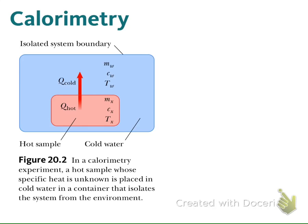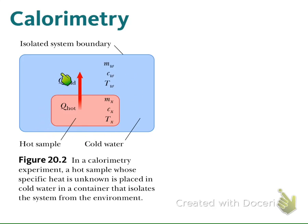To measure the specific heat of an object, we can use the technique called calorimetry, and the device in which we do this measurement is the calorimeter. The calorimeter can be represented schematically as in this diagram. If we want to measure the specific heat of an object, we put it at a higher temperature Tx. The mass of this object is Mx and its specific heat is Cx. Then we put this object into water at a lower temperature Tw.